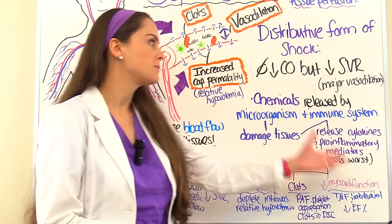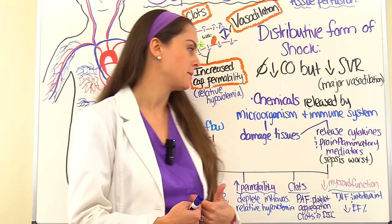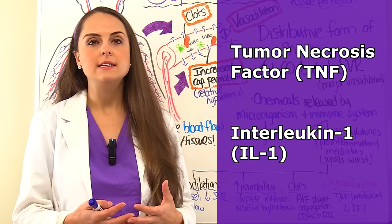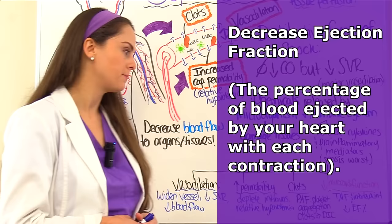Later on, an abundance of cytokines present throughout the body can also affect myocardial function — specifically, tumor necrosis factor and interleukin-1 can decrease ejection fraction, which is the percentage of blood ejected by the heart with each contraction.